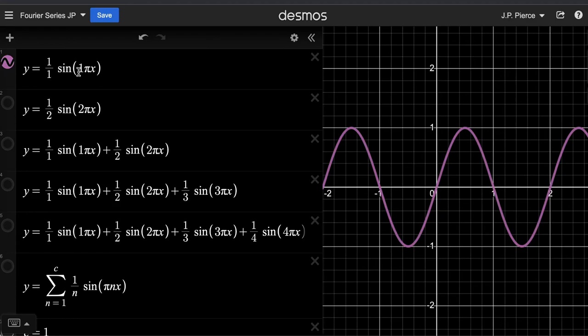Here's the function 1 over 1 sine 1 pi x. And what this does is gives you a sine wave with an amplitude of 1, meaning it oscillates between plus 1 and minus 1. That's how far up and down it goes.